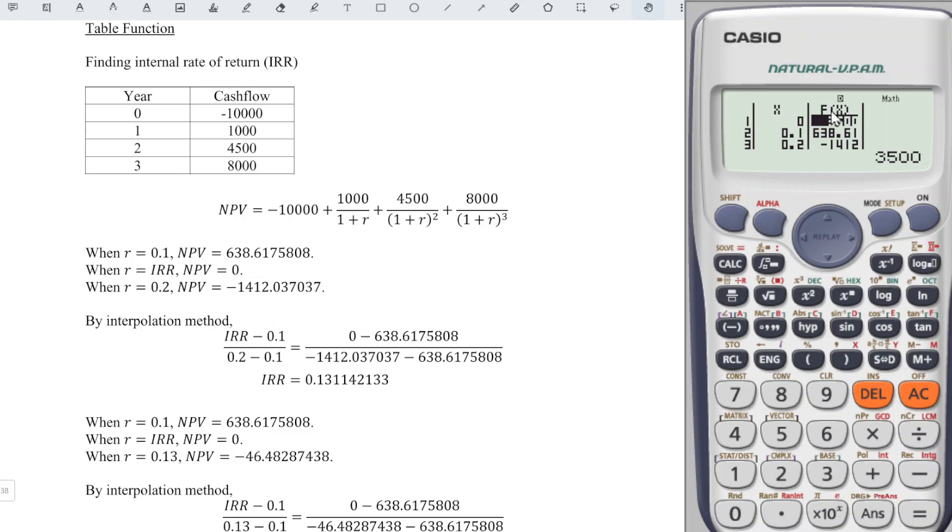We just have to determine the value of FX which is between positive and negative. From here we can see that 0.1 is positive but 0.2 is negative, which means that the internal rate of return is between 0.1 and 0.2.